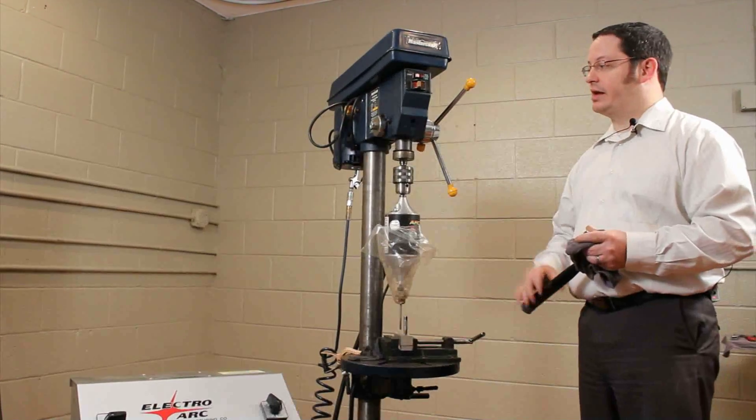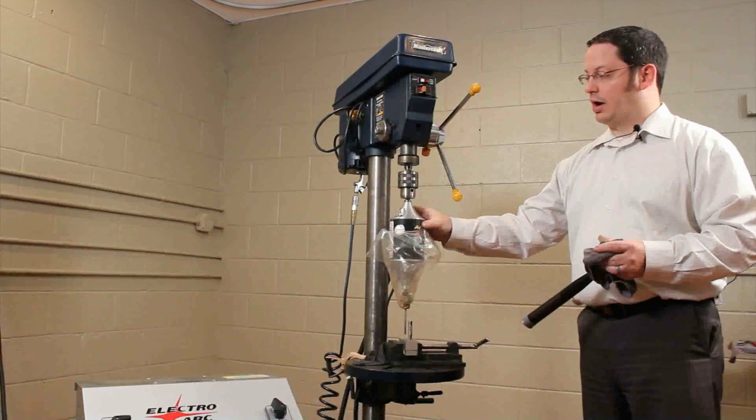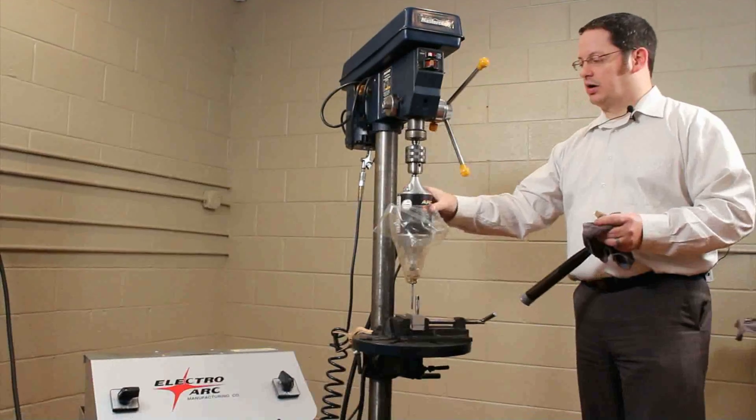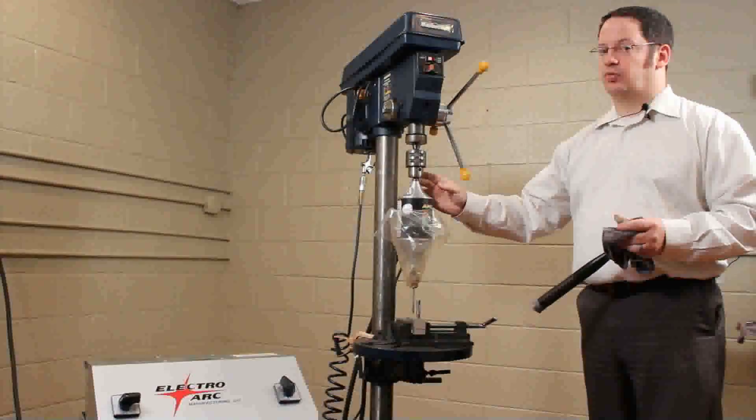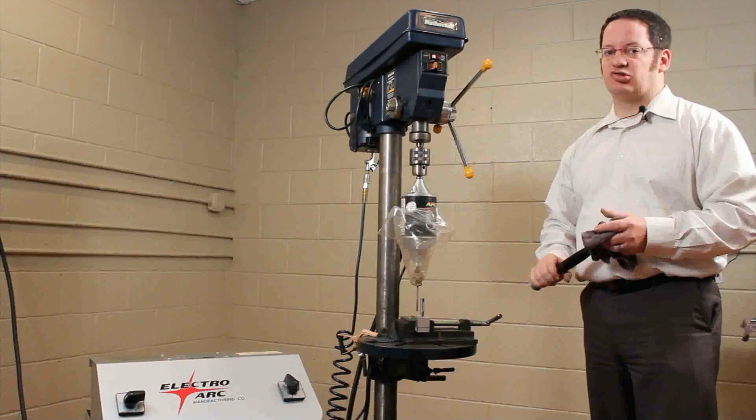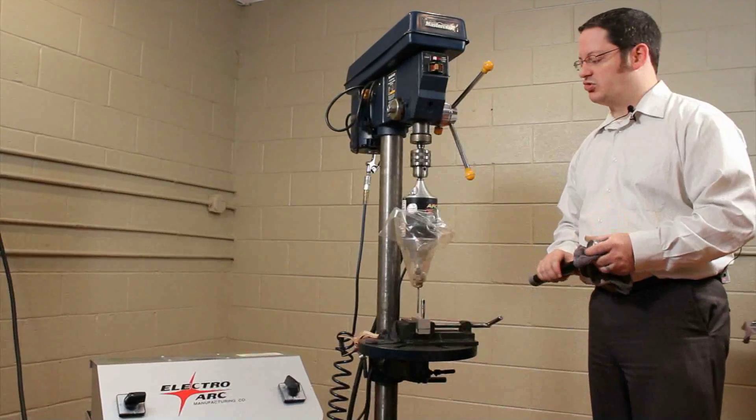The way we have this set up today is we've got our portable arker head chucked up into our drill press. Basically our arker head just comes with a half inch by two inch shank so you can chuck it up into a drill press, CNC machine, lathe, any type of those machine tools.